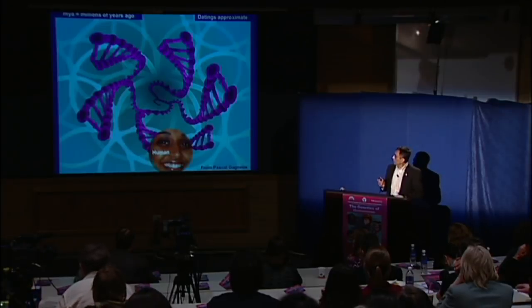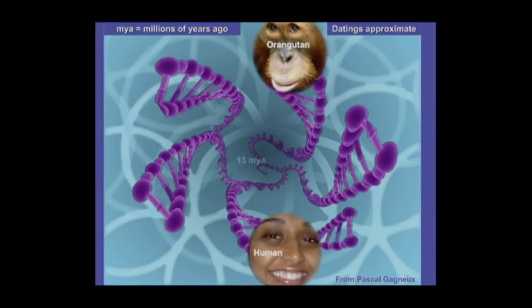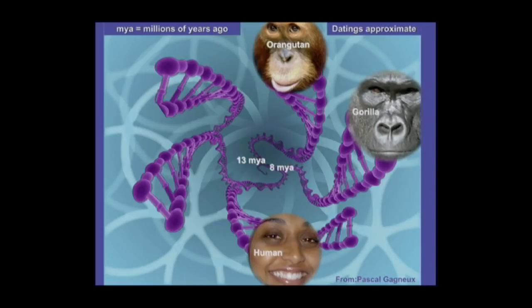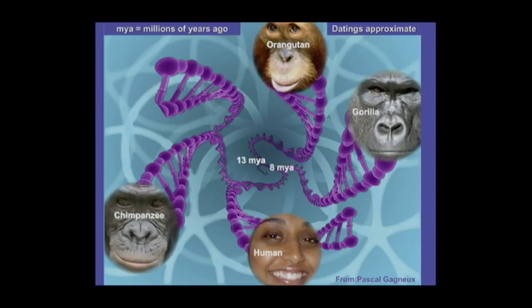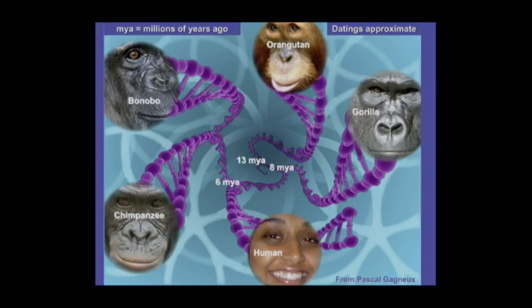By way of introduction, as you probably know, we humans shared a common ancestor with the orangutan about 13 million years ago, with the gorilla about 8 million years ago, with the chimpanzee and bonobo about 6 million years ago, and with our closest extinct evolutionary cousin, the Neanderthal, about half a million years ago. You'll be hearing more about a lot of this along the way.